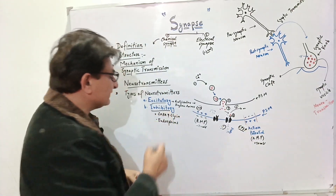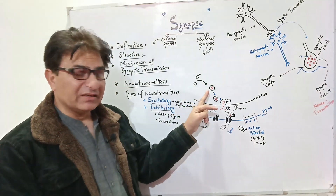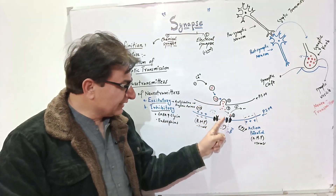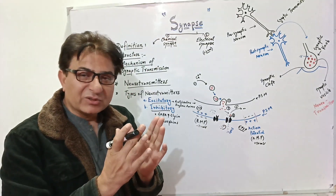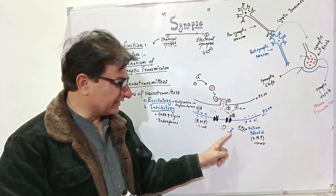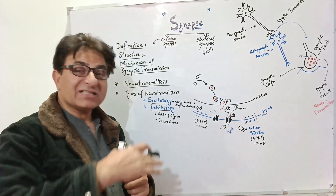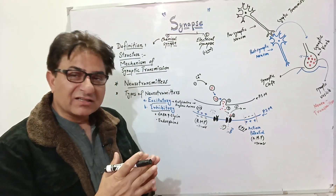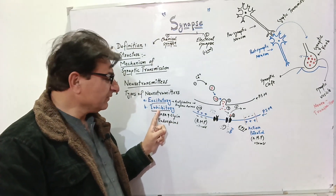Inhibitory neurotransmitters work differently. When inhibitory neurotransmitters are released from synaptic vesicles, the post-synaptic membrane receptors decrease the permeability of the membrane, blocking sodium entrance into the neuron. This increases the threshold value so that the post-synaptic membrane cannot easily generate an action potential. That is why these are called inhibitory neurotransmitters.